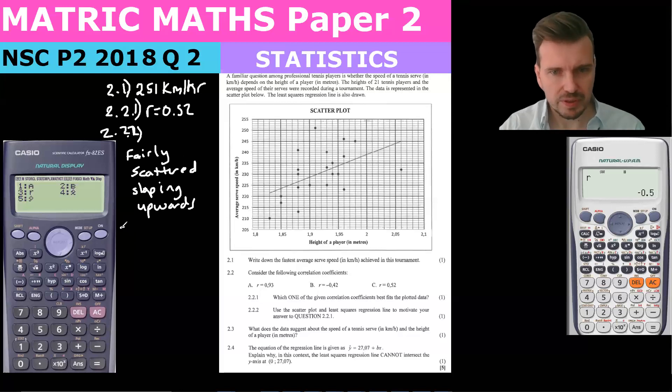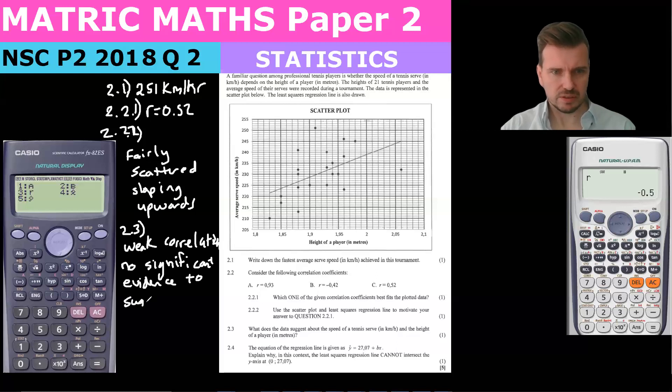2.3: What does the data suggest about the speed of a tennis serve and the height of a player? Because r equals 0.52, it means a weak correlation. Remember, 0.9 is a strong correlation but 0.52 is a weak correlation. So we say no significant evidence to suggest speed of serve is related to height of a player.